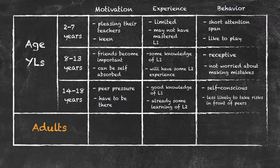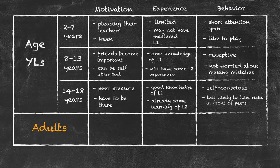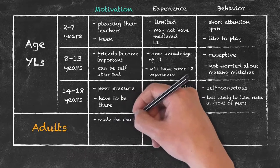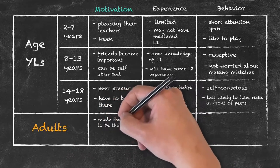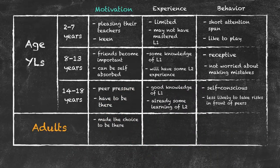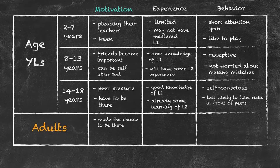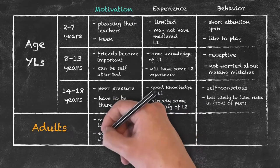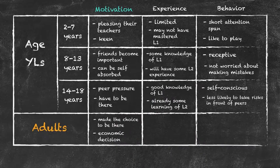Then moving on to the adults. Obviously in terms of motivation with an adult class, they don't always have to be there. They've often made the choice to be there, although this is not always the case, and secondly quite often this decision to actually be there is an economic one. In other words, by learning English they can greatly increase the income that they can produce.